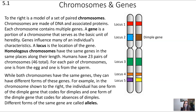There are certainly many correct ways to use all of these terms, but the one I wrote relates to the homologous chromosomes pictured here. To the right is a model of a set of paired chromosomes. Chromosomes are made of DNA and associated proteins, and they carry the genetic information — each chromosome contains multiple genes. A gene is that part of the chromosome that serves as the basic unit of heredity — this is how traits are passed on from one generation to the next. A locus is the location of the gene.